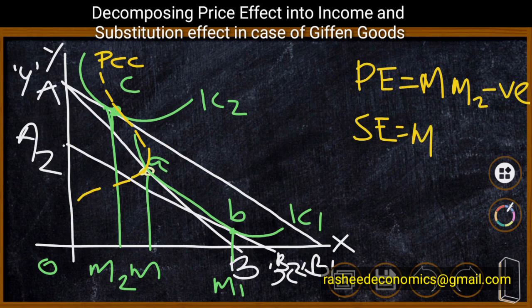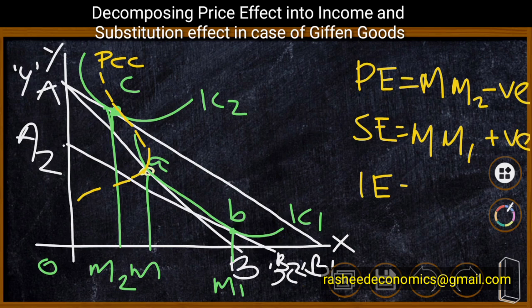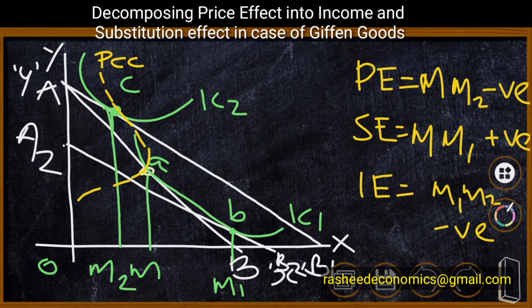Price effect equals MM2, which is negative — a backward movement. The substitution effect equals MM1: after compensating variation in income, the consumer moves from equilibrium point A to B along indifference curve IC1, and this movement is positive. The income effect equals M1M2, which is a large negative quantity, higher than the positive substitution effect MM1.